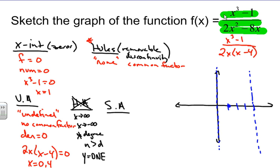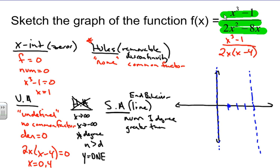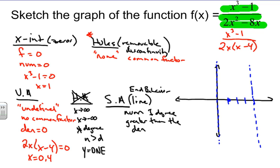For slanted asymptotes: these also go without bound but form a line. It's an end behavior that is a line — similar to a horizontal asymptote but slanted. We need to check whether the numerator's degree is exactly one degree greater than the denominator's. In this case, yes it is, so we're going to divide the denominator into the numerator, and the quotient will be our slanted asymptote equation.